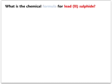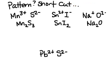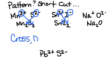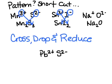Pause the video and try to solve lead two sulfide for yourself by writing its chemical formula. Now let me introduce a shortcut — a pattern called cross, drop, and reduce. You're going to cross the ion charges over to the other atom, drop them down as subscripts, and then reduce if possible. The table method and teeter-totter work just great too, but this pattern can be a useful shortcut.